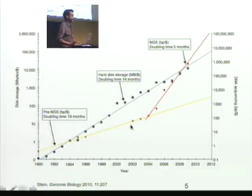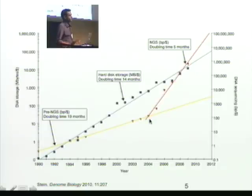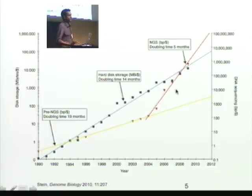Similarly, I'm showing the amount of sequencing you can do — the number of base pairs you can sequence per dollar over time. There were sort of two phases: pre-next-gen sequencing, which was already exponential, and then after the early 2000s some new technologies came into play — so-called next-gen sequencing technologies — and the doubling time is now about five months.